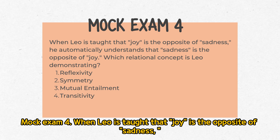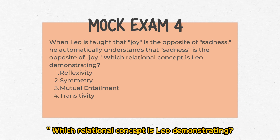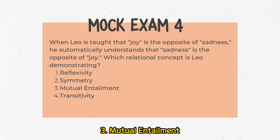Mock Exam 4: When Leo is taught that joy is the opposite of sadness, he automatically understands that sadness is the opposite of joy. Which relational concept is Leo demonstrating? 1. Reflexivity, 2. Symmetry, 3. Mutual entailment, 4. Transitivity.